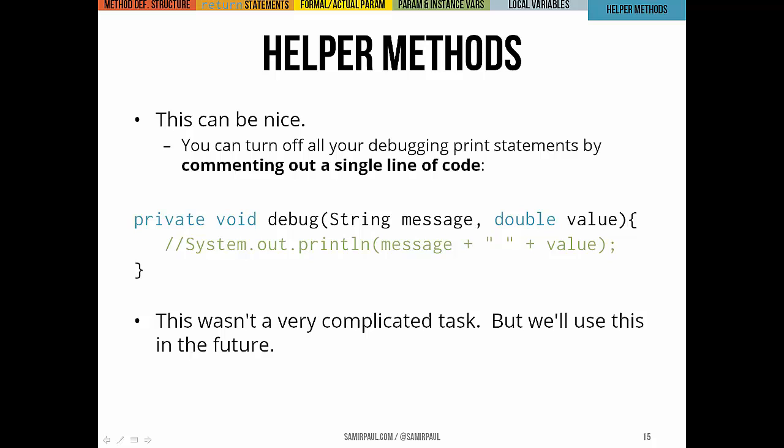You could call that little private helper method from any method in the same class, and then when you decide, you know what, the program's done, I actually don't need to see these print statements anymore because I know that it works properly, you only have to change one line of code to get rid of all of them. All you have to do is go ahead and comment out the print statement in your debug method. That's a nifty little trick. It's not the only use of private helper methods, but it is one little example of when you might do it.